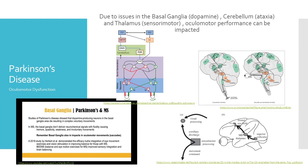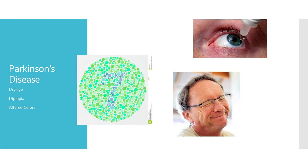We may not always think about visual issues that can occur with Parkinson's disease, but there are definitely some things that can happen here. A lot of ocular motor dysfunctions impacting saccades and pursuits can happen due to issues in the basal ganglia, which aren't releasing enough dopamine, in the cerebellum because of toxic movement, and in the thalamus, which is controlling sensory motor input. Other issues that can also happen are dry eye due to decreased blinking, diplopia because of muscle control with vergence, and also changes in color perception, especially blue and green.